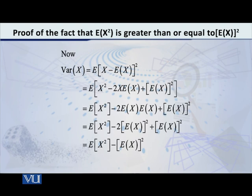We can also say that it is the expected value of X minus E[X], whole square, because mu is the same thing as E[X]. Now, the formula is the formula of (a - b)², which we open as a² minus 2ab plus b². So this expression will be equal to the expected value of X² minus 2X times E[X] plus (E[X])².